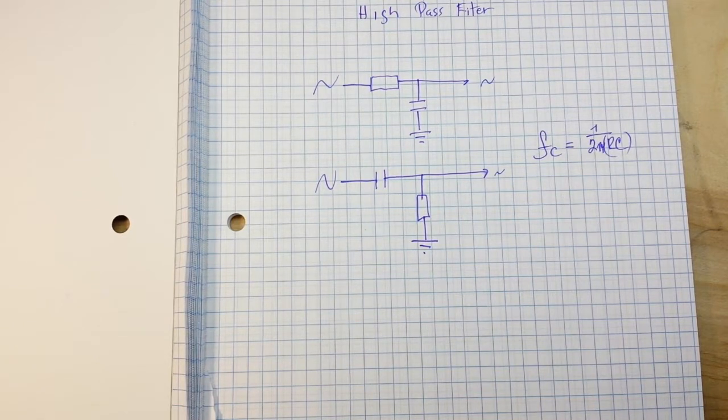Now, the reason the high-pass filter works is because the reactance of the capacitor is very high at low frequencies. So it acts like an open circuit and it blocks or attenuates those frequencies. But the reactance drops at higher frequencies, allowing more of the signal to pass.